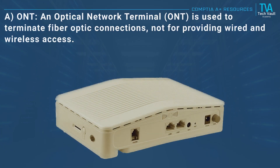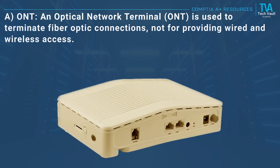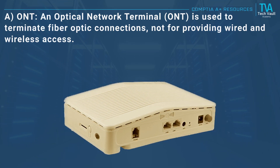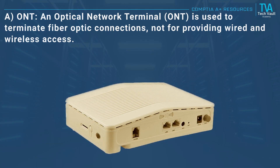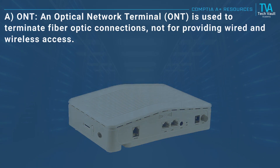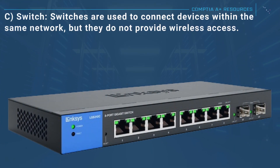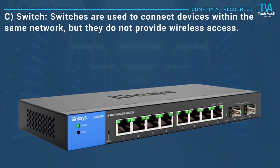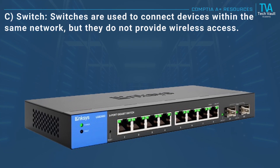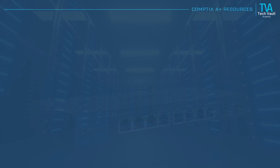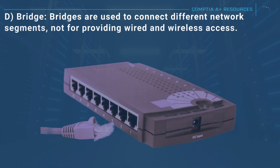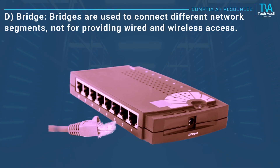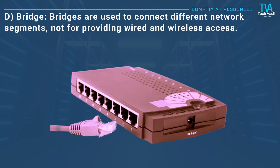A, ONT: an optical network terminal is used to terminate fiber optic connections, not for providing wired and wireless access. C, switch: switches are used to connect devices within the same network but do not provide wireless access. D, bridge: bridges are used to connect different network segments, not for providing wired and wireless access.